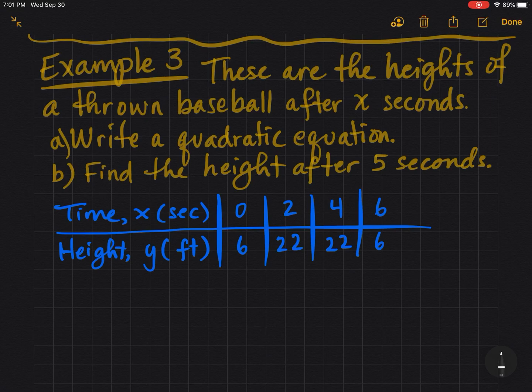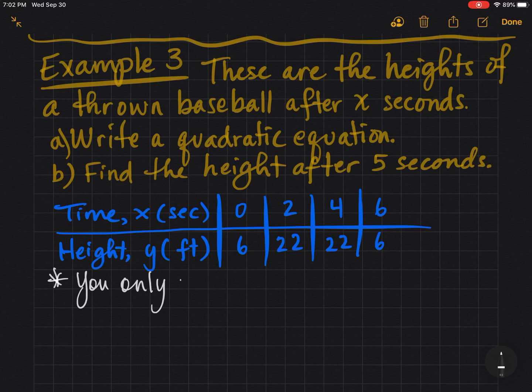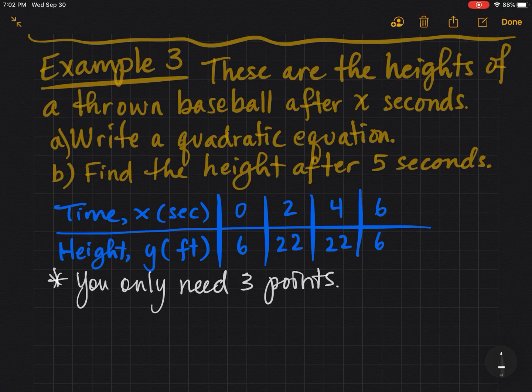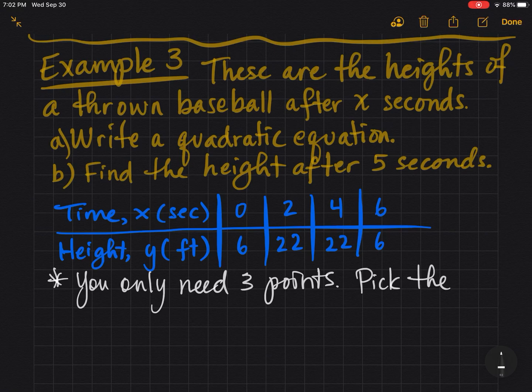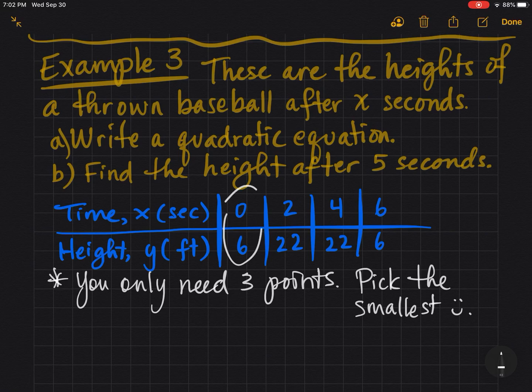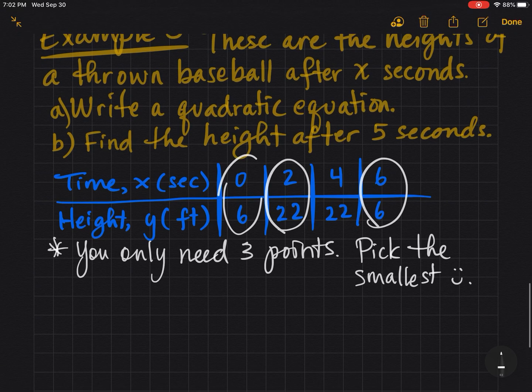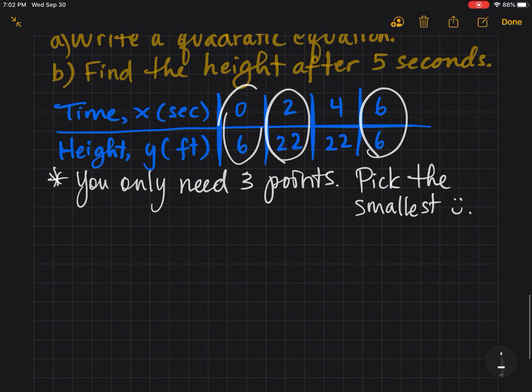To write the equation of a parabola you only need three points. I say pick the smallest. However, it'll work out no matter which ones you pick. I just think smaller numbers are easiest. So I'm going to pick this one, this one, and definitely that one. And no matter what I'm always going to pick a point that has a zero, and you'll see why in just a moment.